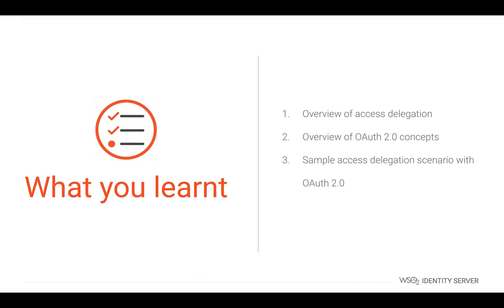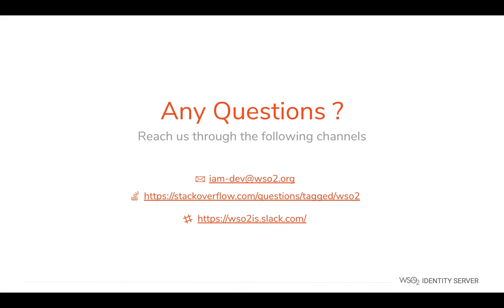We have now come to the end of this training video. Let's have a quick recap of what we learned. First, we got to know the purpose of access delegation. Next, we learned about OAuth 2 concepts at a high level. Then, we looked at a sample scenario to understand how OAuth 2 works. If you have any questions or need further clarification, feel free to get in touch with us through the following channels: our email is im-dev@wso2.org, on Stack Overflow tag with wso2 or wso2is, and our Slack channel is wso2is.slack.com. Thanks for watching this video. Hope to meet you in another exciting training video.